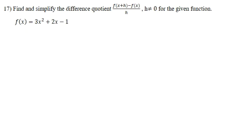We are looking at question number 17, which asks us to find and simplify the difference quotient: f of x plus h minus f of x, divided by h, where h cannot equal 0, for the given function f of x equals 3x squared plus 2x minus 1.